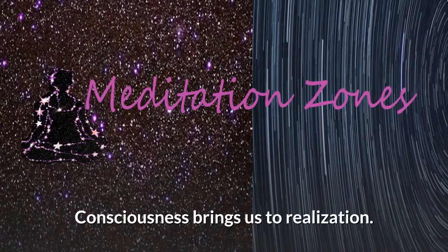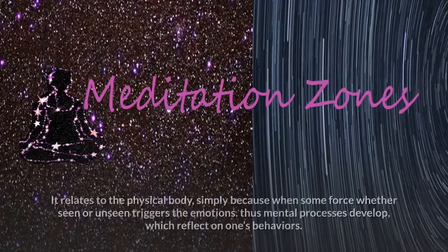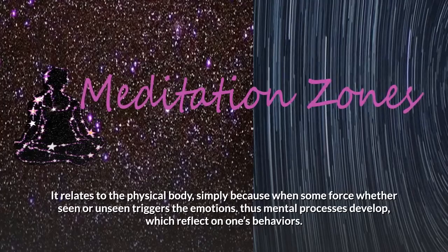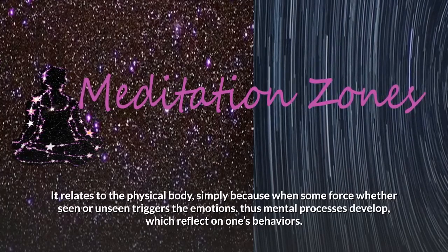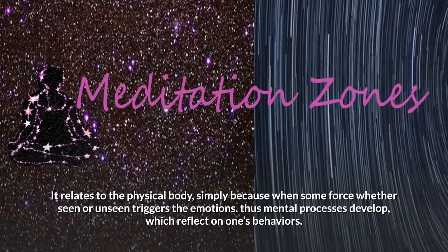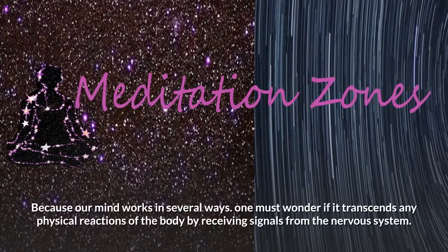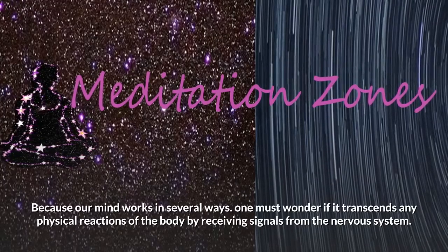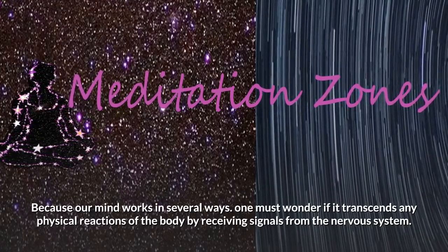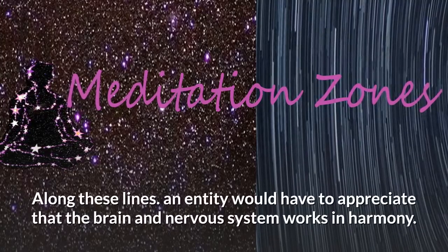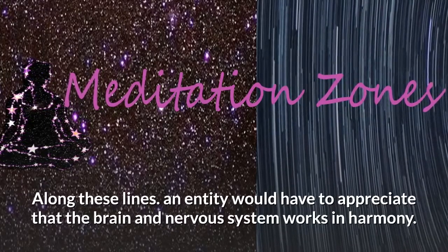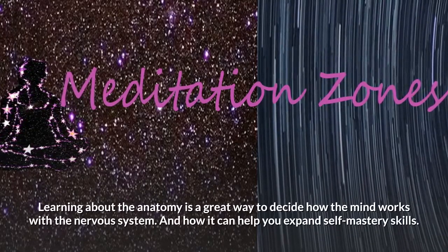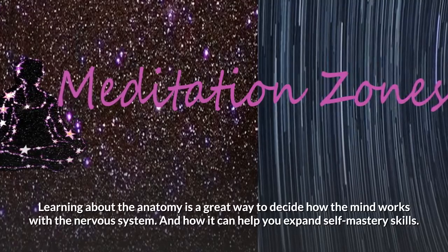Consciousness brings us to realization and relates to the physical body, because when some force — whether seen or unseen — triggers the emotions, mental processes develop which reflect on one's behaviors. Because our mind works in several ways, one must wonder if it transcends any physical reactions of the body by receiving signals from the nervous system. Along these lines, one would have to appreciate that the brain and nervous system work in harmony. Learning about the anatomy is a great way to understand how the mind works with the nervous system.